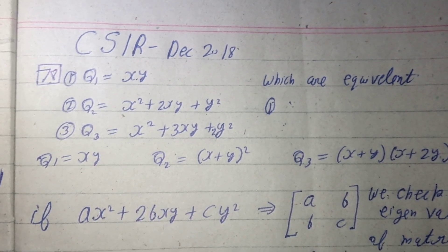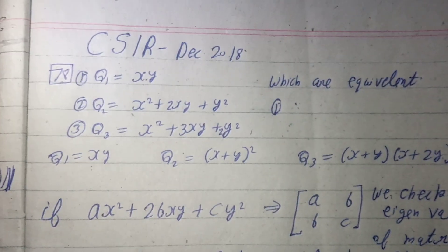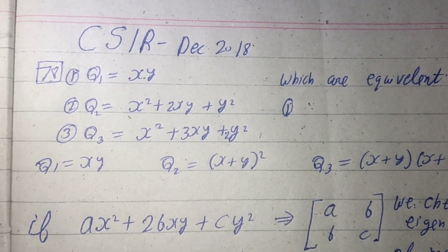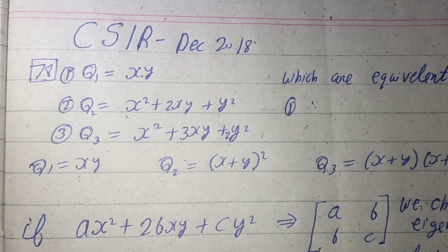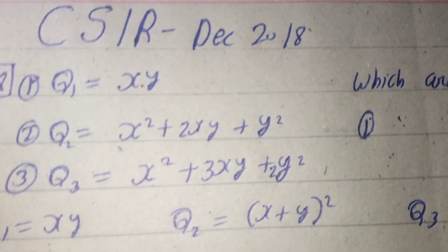I am going to discuss a question from CSIR December 2018 net. The question says, there are three quadratic forms given: q1, q2, and q3.